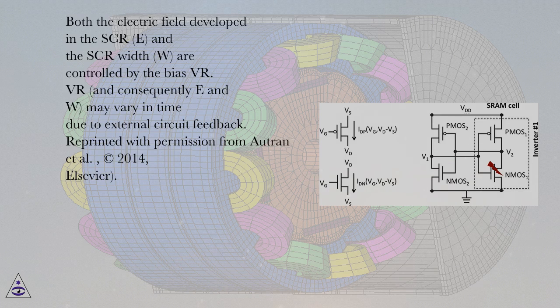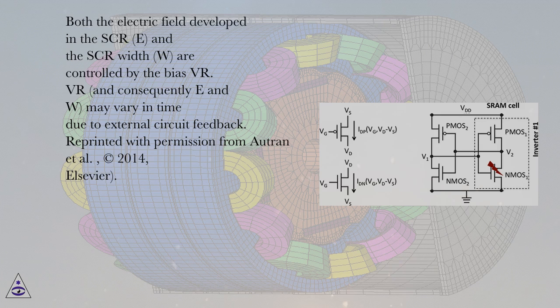Both the electric field developed in the SCR, E, and the SCR width, W, are controlled by the bias VR. VR, and consequently E and W, may vary in time due to external circuit feedback.